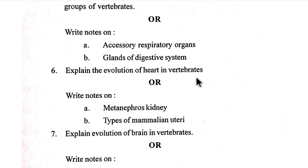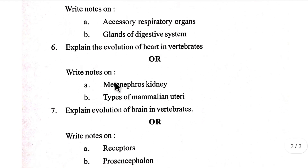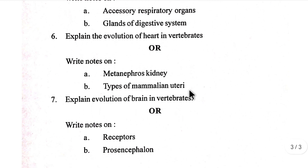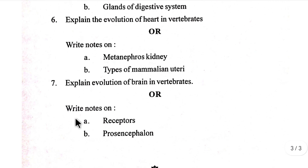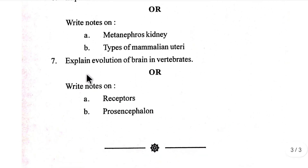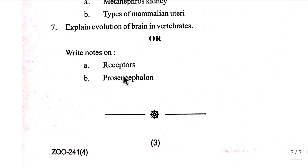Number six: explain the evolution of heart in vertebrates. Write a note on receptors. Write notes on metanephros kidney, types of mammalian uteri. Number seven: explain evolution of brain in vertebrates. Write a note on receptors.